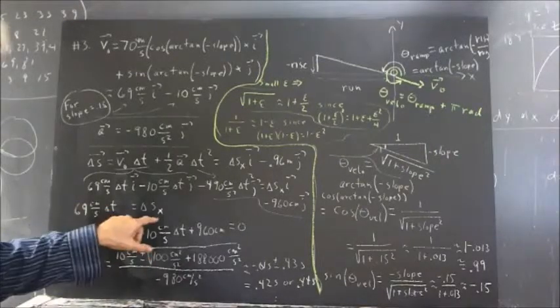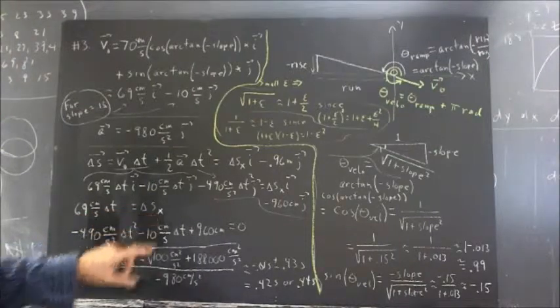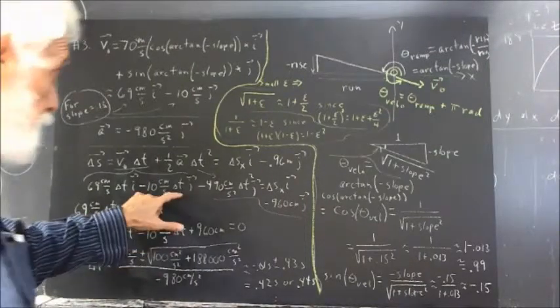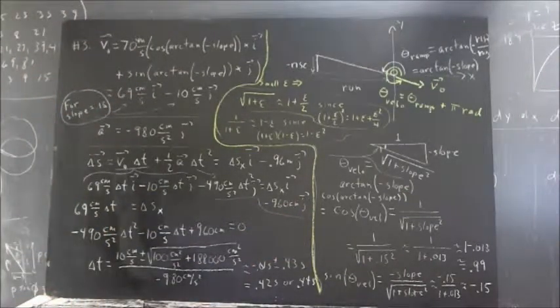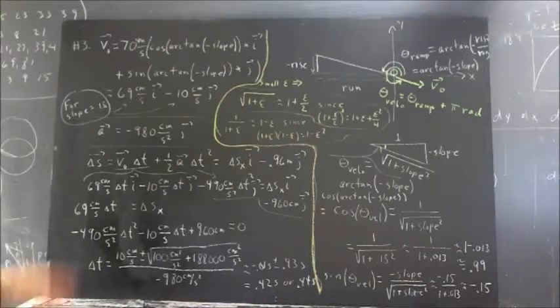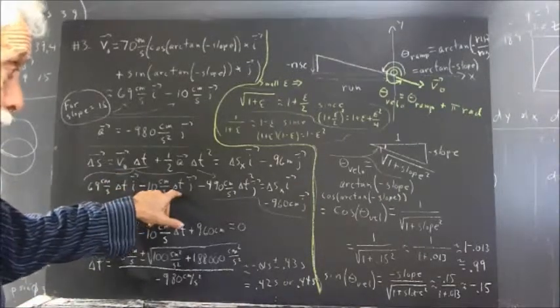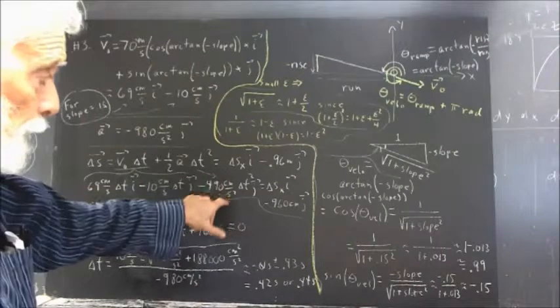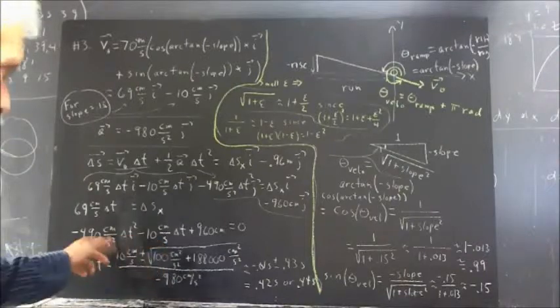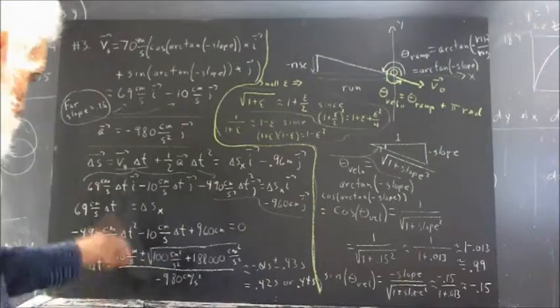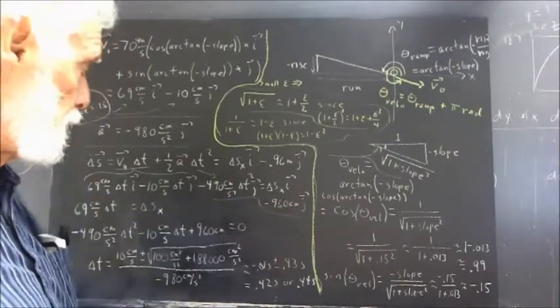Now, we don't know delta T or delta SX. So, hopefully, we're going to find one of those quantities from the equation that we get when we set the J components equal. Well, set the J components equal, and you get negative 10 centimeter per second delta T minus 490 centimeter per second squared delta T squared here.